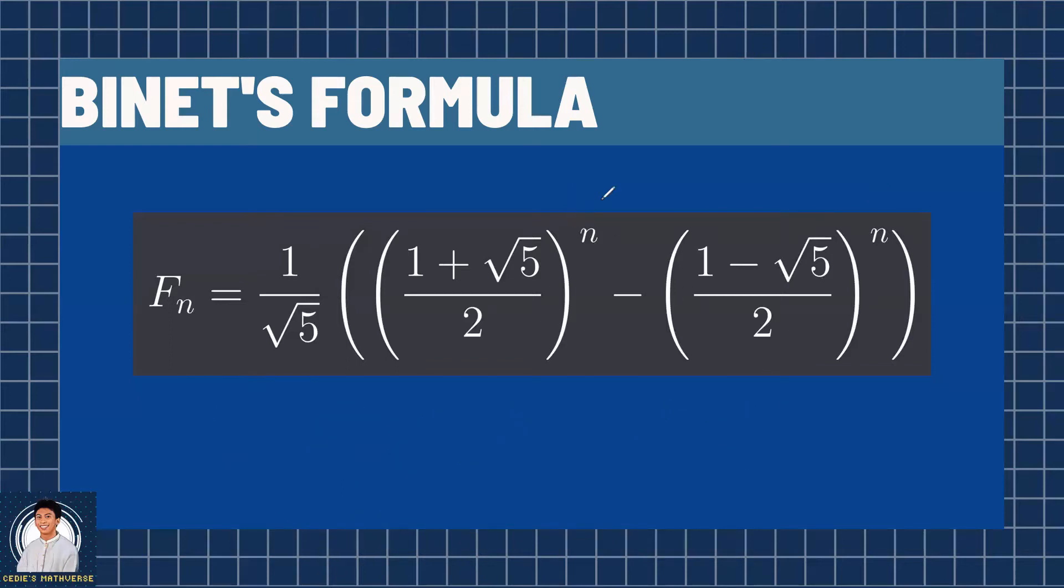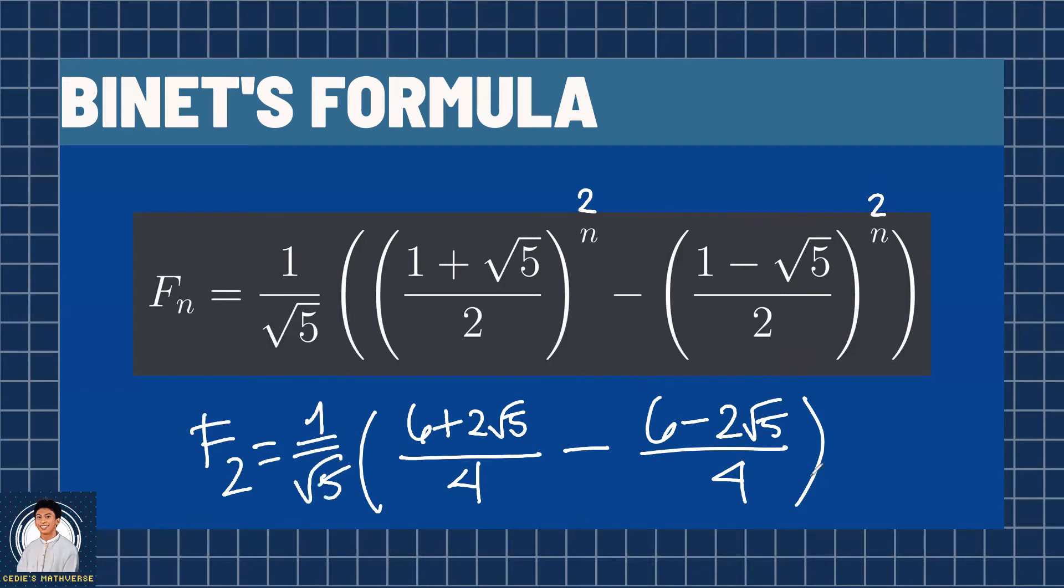How about for n equals 2? Squaring this gives us 6 plus 2 square root of 5 using perfect square trinomial all over 4. Then minus quantity 6 minus 2 square root of 5 all over 4 when you square this one. So we have F sub 2 equals 1 over square root of 5. Then this full expression, 6 over 4 minus 6 over 4 equals 0. Meanwhile, 2 square root of 5 over 4 minus negative 2 square root of 5 over 4 is 4 square root of 5 over 4. So 1 over square root of 5 times 4 square root of 5 over 4. This cancels out, leaving us 1.